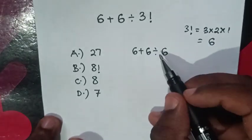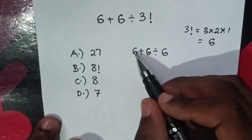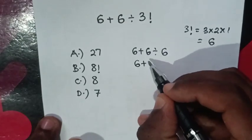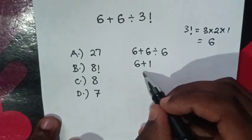So we will start first with division from BODMAS rule, then addition. So it will be 6 plus 6 divided by 6 is 1. So 6 plus 1 is 7.